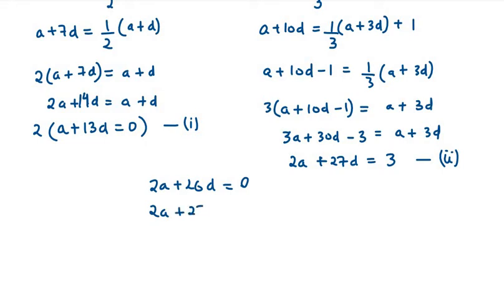You have to subtract that. 2A minus 2A, 26D minus 27D is minus D, 0 minus 3 is minus 3. So it will be D equals minus 3 over minus 1. Minus minus gets cancelled out, so D equals 3.